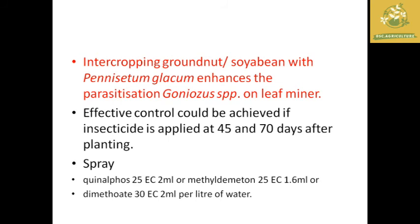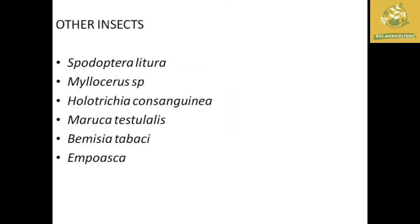For insecticide spraying as a final option, application at about 45 and 70 days after planting is recommended. Spraying of Fenvalerate 25 EC at 2 ml, or Methyl demeton 25 EC at 1.6 ml, or Dimethoate 30 EC at 2.2 ml per liter of water is effective against the insects listed for soybean. Some other insects seen in soybean include Spodoptera litura, Mythimna species, Holotrichia consanguinea, Maruca testulalis, Bemisia tabaci, and Etiella zinckenella.